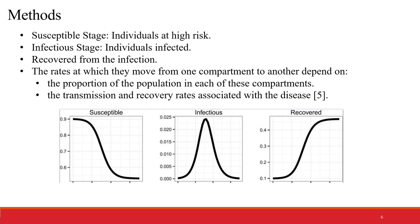The susceptible stage: the individuals at high risk of having the disease. The second stage is the infectious stage, that is the individuals are infected. Whereas third is the recovered stage, in which the person has been recovered from the infection.